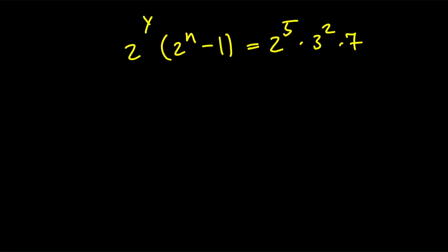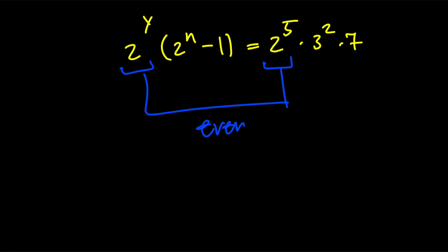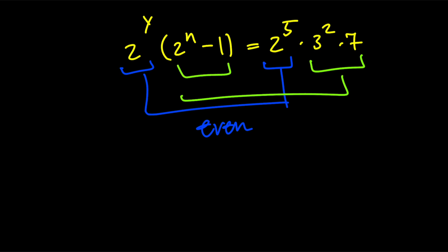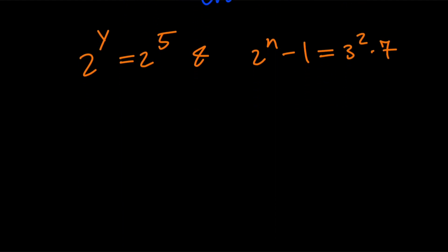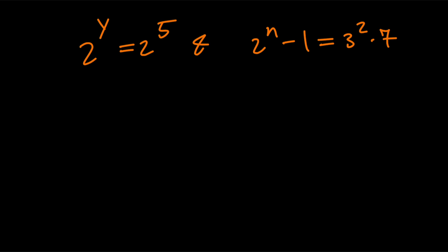We want to solve for y and n. Notice that 2 to the power of y and 2 to the power of 5 are even, while the quantity 2 to the power of n minus 1 and 3 squared times 7 are odd. So we can match the even factors and the odd factors separately, which means 2 to the power of y equals 2 to the power of 5, giving us y equals 5.